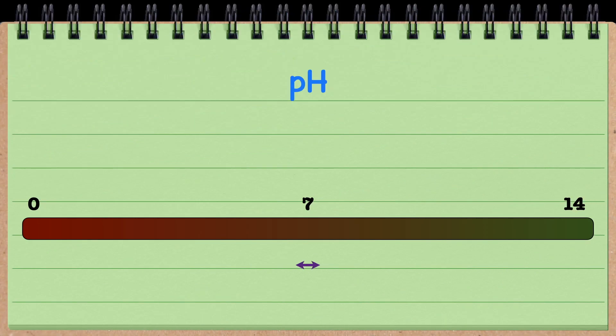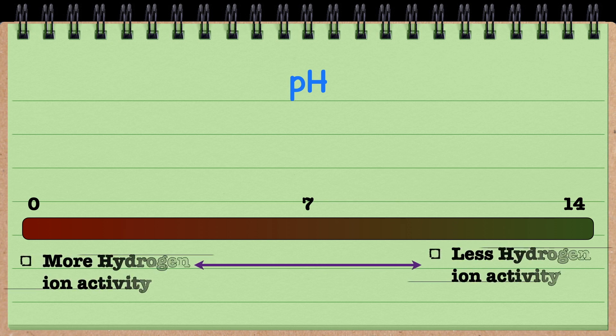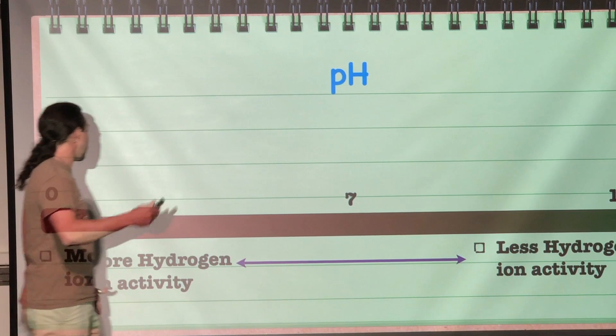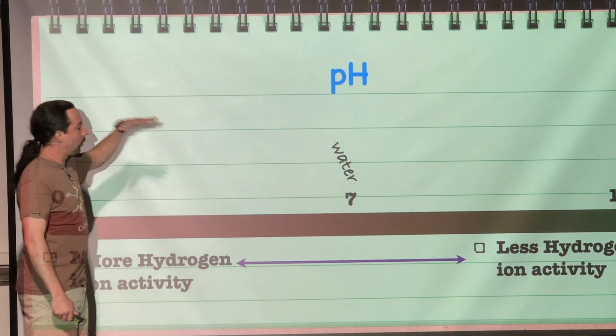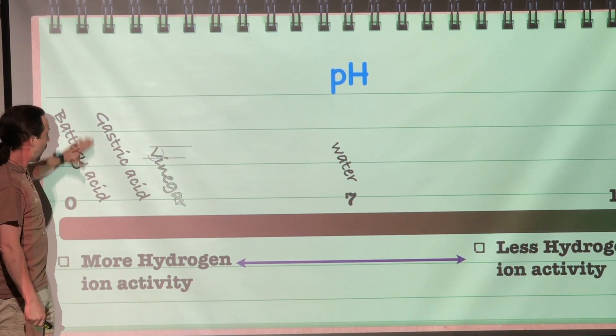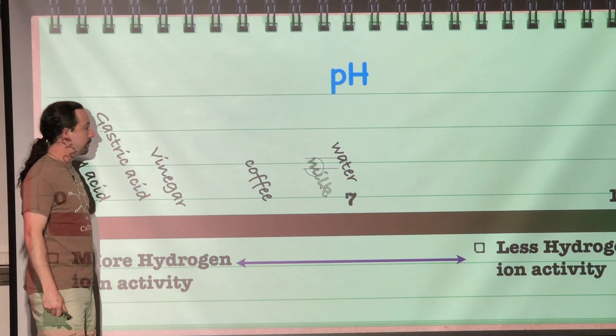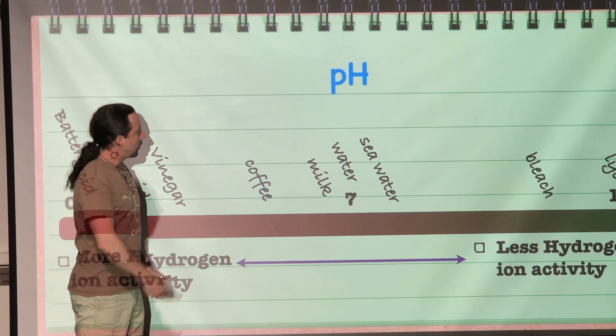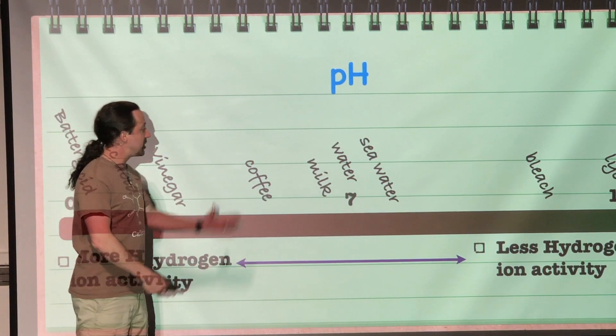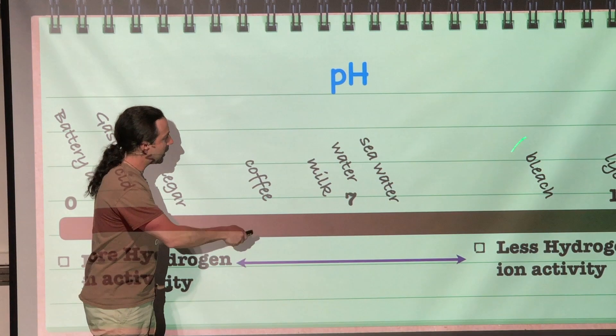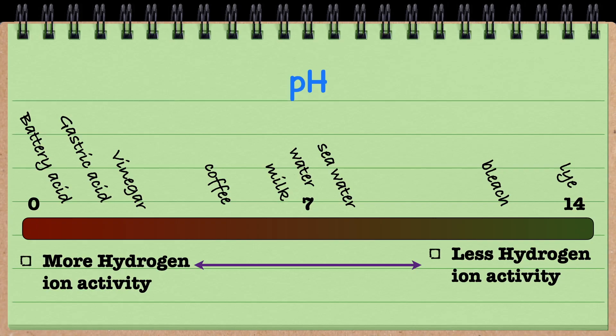If we were to think about this, some common solutions that would exist on the pH scale, where we have less than 7 would be acidic, and greater than 7 would be basic, and 7 is neutral. Pure water would exist at a pH of 7. Battery acid would exist with a pH of approximately 1. Gastric acid, a pH of 2. Vinegar, a little bit more, about 3, 2.5. Coffee is still slightly acidic at a pH of 5. Milk, pH of about 6.5. Seawater, though, is actually slightly basic, with a pH of about 7.7. Bleach is basic, with a pH of approximately 12. And lye, with a pH of approximately 14, is extremely basic.